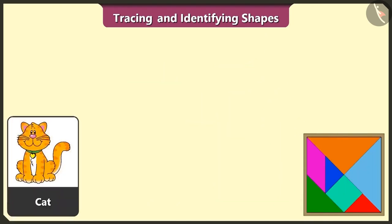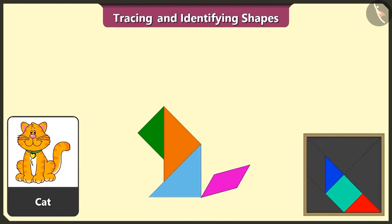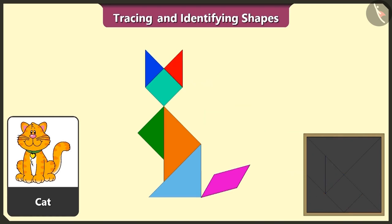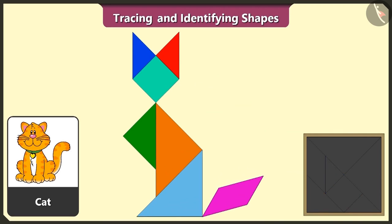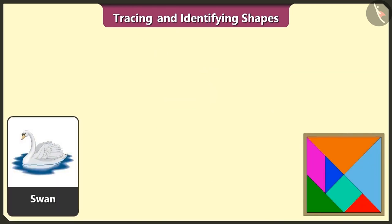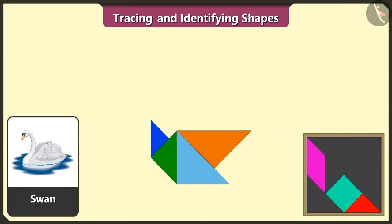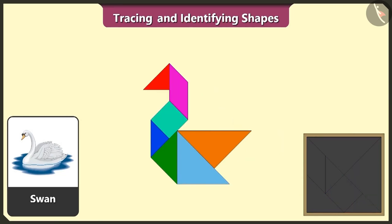This is a cat. Let's make a cat using 3 triangles, 1 quadrilateral, 1 square and the remaining 2 triangles. See, cat is ready. This is a swan. Now we will make a swan using 4 triangles, 1 square, 1 quadrilateral and 1 triangle. Swan is also ready — this is really interesting.